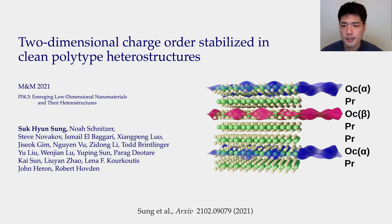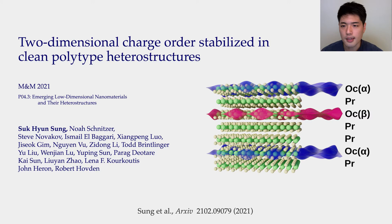On the right is a schematic diagram of tantalum disulfide polytype heterostructures. Tantalum disulfide, or TaS₂, is a layered quasi-2D material that comes in two different polytypes: octahedral or prismatic. Here you can see monolayers of octahedral polytype sandwiched between prismatic layers. In this talk, we will show that this encapsulation stabilizes a latent quantum state at room temperature that is normally only stable at lower temperatures.